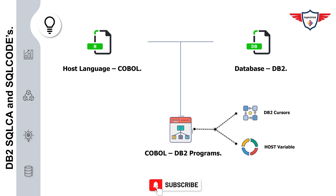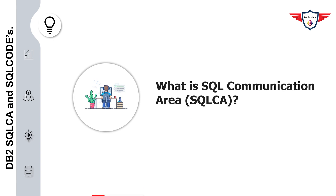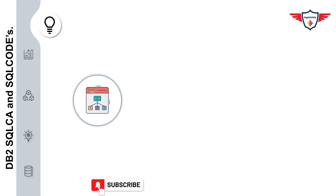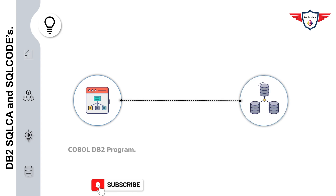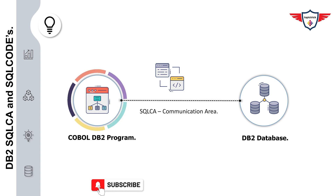Let's deep dive into SQLCA and answer: what is SQLCA, what is its significance in a COBOL DB2 program, and how exactly you can use it in your applications. The term SQLCA stands for SQL Communication Area. It is a collection of variables used by DB2 to communicate with an application program.